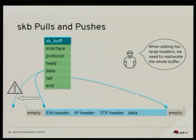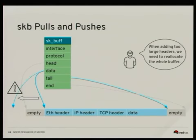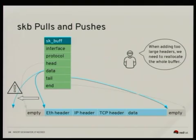There is one problem: if we have all headers added and want to add one more but don't have enough space at the beginning, we can't just move the pointer. We have to do more work: allocate new memory, copy the packet to the new memory shifted so there's space at the beginning, update the head, end, data, and tail pointers, and free the old memory. This is an expensive operation, but it can be done because the packet is always accessed through the SK-buff.